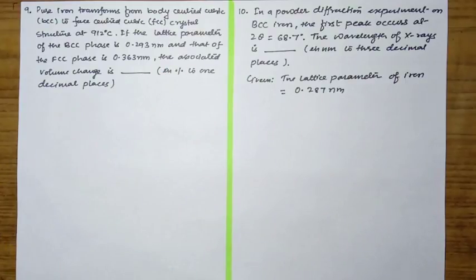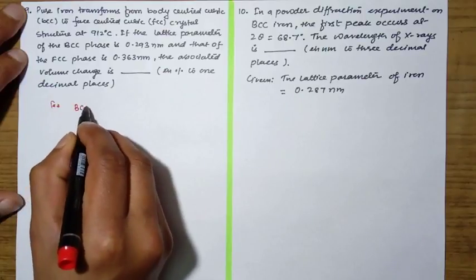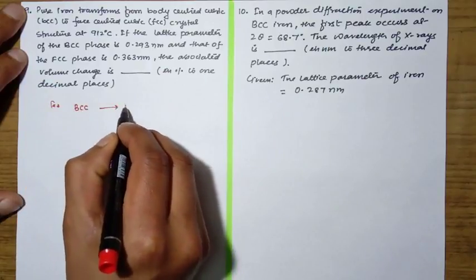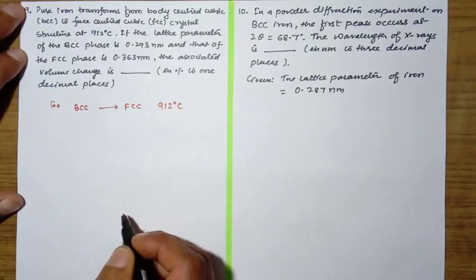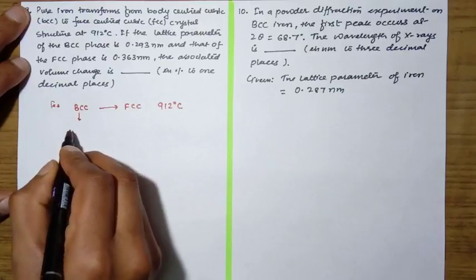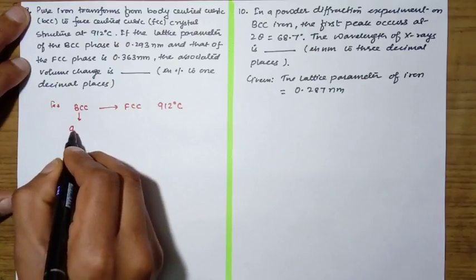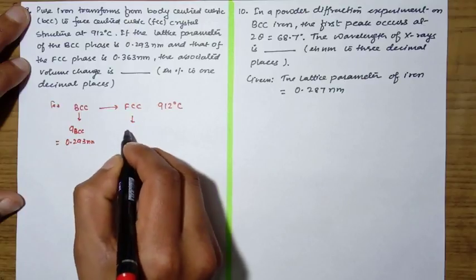Basically here it is given that iron, which is initially at BCC structure, transforms to FCC at 912 degrees centigrade. The BCC has a lattice parameter and the lattice parameter of FCC is equal to 0.363 nanometer.